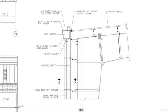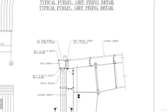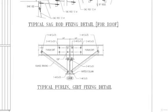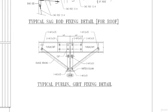The detailing at the rafter and column junction involves providing a plate, adding stiffeners, and providing bolts so that 100% of the moment is transferred from the rafter to the column section. Here we are tying the top as well as the bottom flange of the section to the purlins.